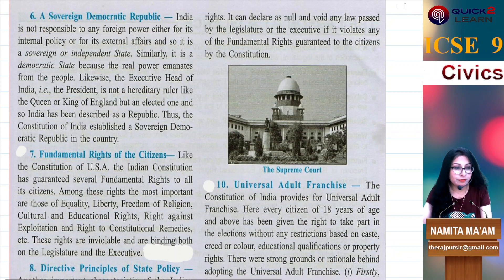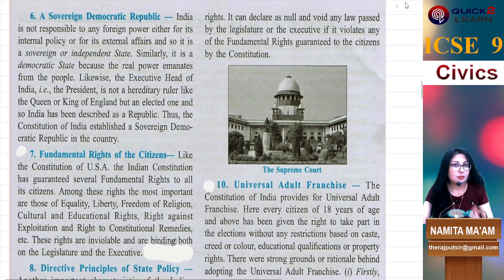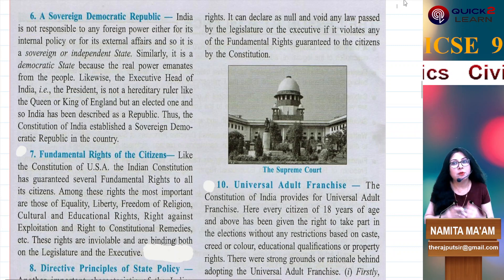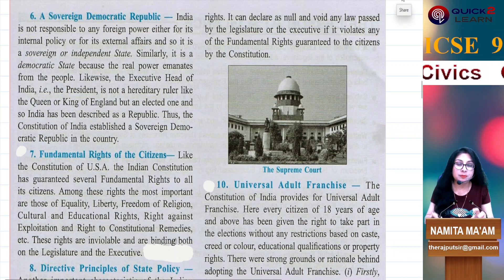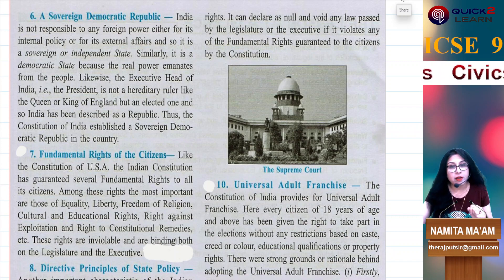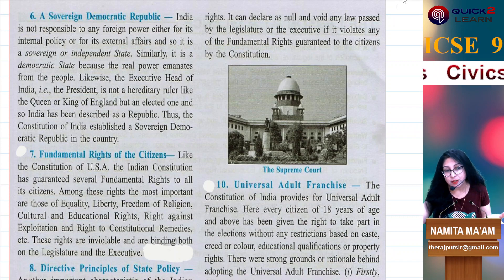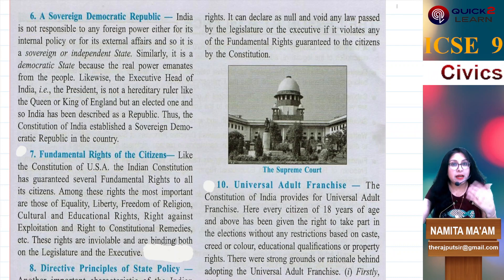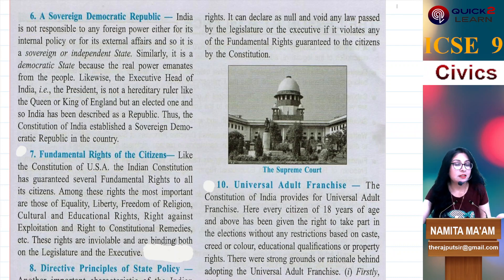Hello everyone. Now we are continuing with chapter 2 of civics, in which we discuss the various features of the constitution and basic principles. We have come to the 6th point, which tells us that India is a sovereign democratic republic.